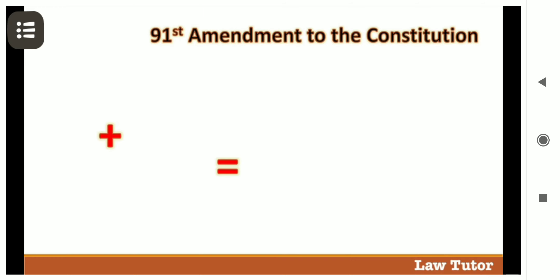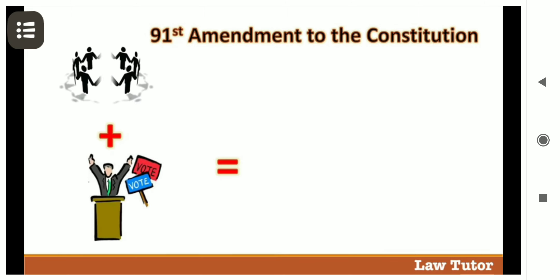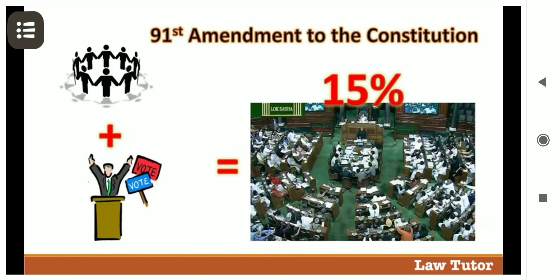In order to limit the size of a Ministry, the Constitution of India was amended in 2004. According to the 91st Amendment to the Constitution in 2004, the total number of Ministers in the Council of Ministers, including the Prime Minister, should not exceed 15% of the total members of the Lok Sabha. The same law applies to the State Legislatures also.